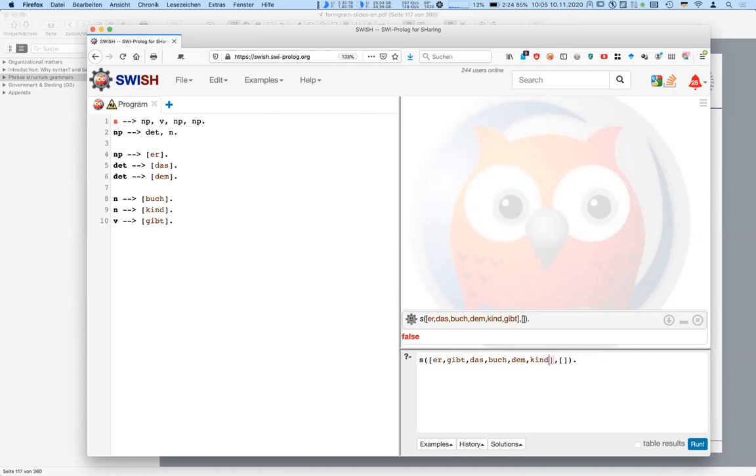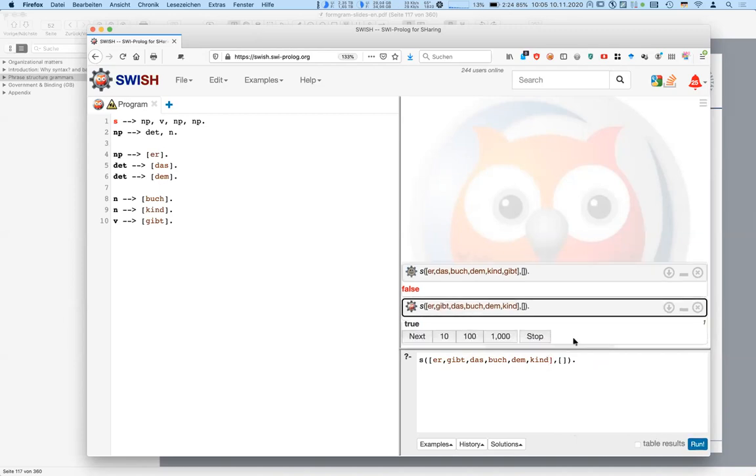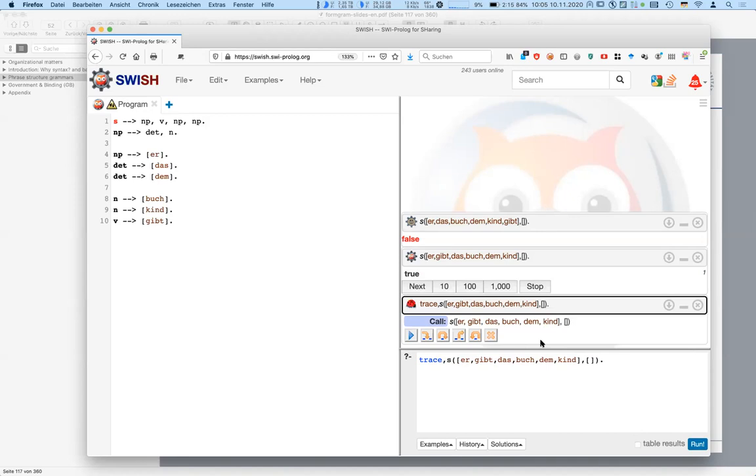So we put the 'gibt' at the second position and I press run again and then it should say true. Hooray. Okay. Yeah, so this is our rule and what Prolog does in order to parse a sentence is that it tries to find an NP at the beginning. We can actually show that. So you can see all the steps it does now.